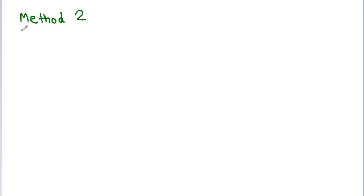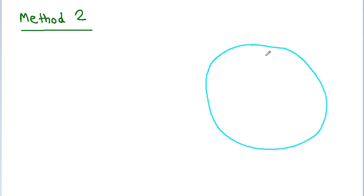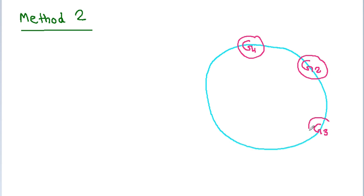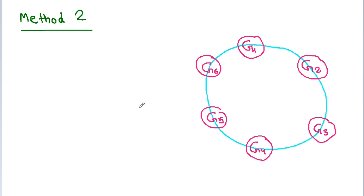Method 2: We have a circle and we arrange 6 girls in it — G1, G2, G3, G4, G5, and G6. The number of ways to arrange these 6 girls in a circle is 5!.